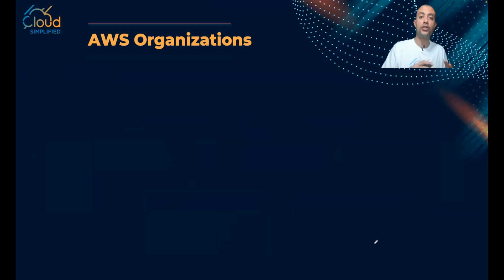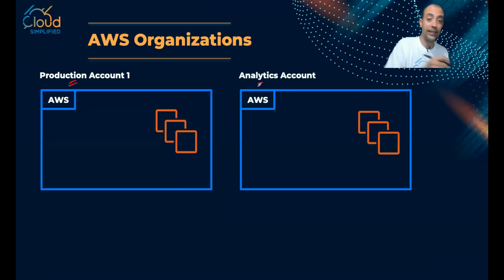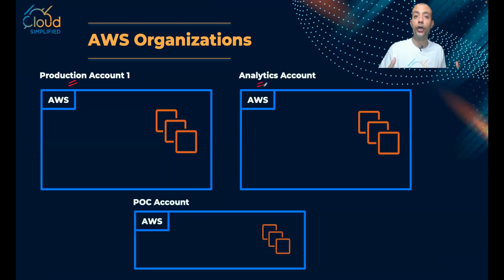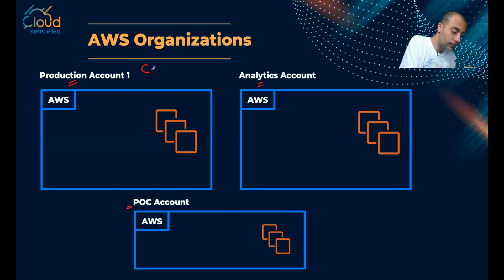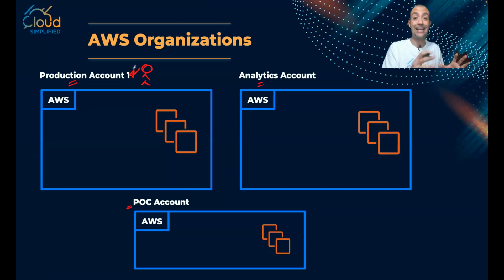The best practice is simply to create different AWS accounts — one account for production, a completely different account for data analytics, and maybe a third account for your POC. When you do this, a user assigned to account number one can only access resources inside that account and cannot access resources in the other accounts. That is the best practice for separating resources.